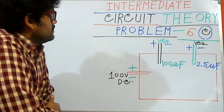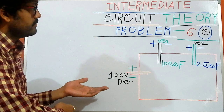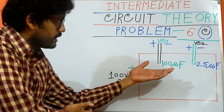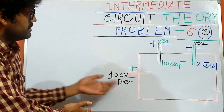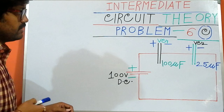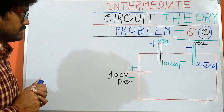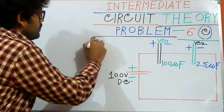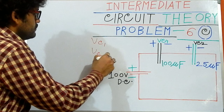Hi, we are Engineering Brothers. For this intermediate circuit theory problem, I have an interesting problem. This is our last type of problem on capacitors. Two capacitors — 100 microfarad and 25 microfarad — are connected in series with a 100-volt DC source. We need to find the charge Q for both capacitors, the voltage VC1 across capacitor 1, and the voltage VC2 across capacitor 2.